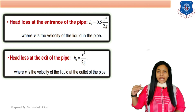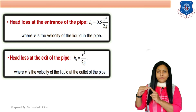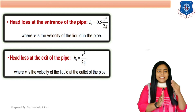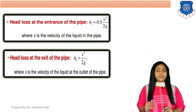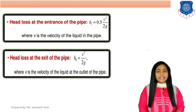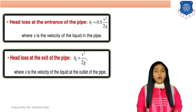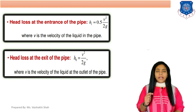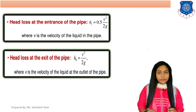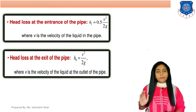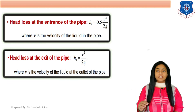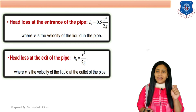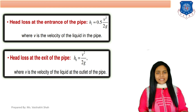Another equation: head loss at exit of the pipe. When fluid enters there is head loss at entry; when fluid is passing there is head loss due to friction; and when fluid exits from the pipe there is also head loss called head loss at exit, indicated as ho (outlet). The equation is ho = V² / 2g. In both equations, V is the velocity of liquid flowing in the pipe — at entry and at outlet respectively.